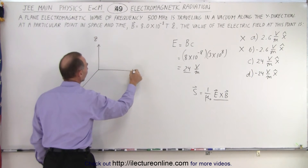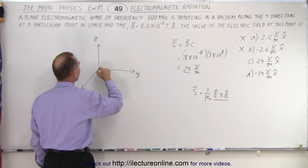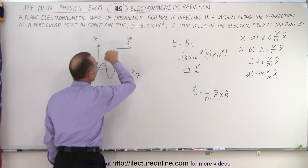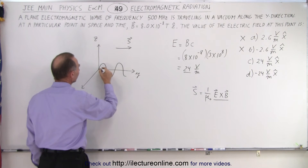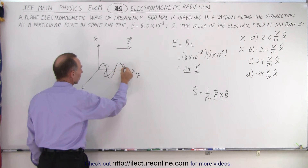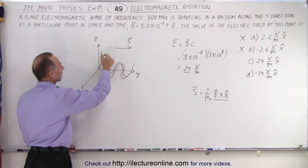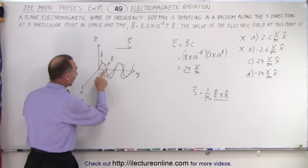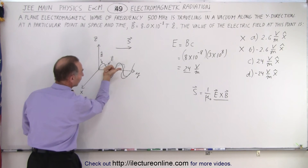Here we have the Z direction, the Y direction, and the X direction. The magnetic field is pointing in the Z direction — let's say it's oscillating upward — and the direction of motion is in the Y direction, so the Poynting vector points that way. In order to have E cross B point in the Y direction, the electric field needs to be in the negative X direction when the magnetic field is up. Using the right-hand rule, we point our fingers in the direction of the electric field — negative X — then curl them toward the magnetic field — positive Z — and our thumb points in the direction of electromagnetic wave motion.